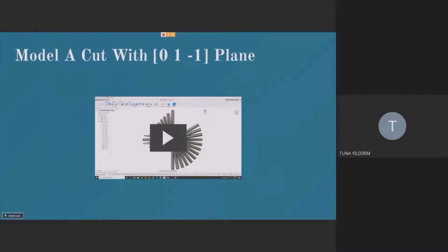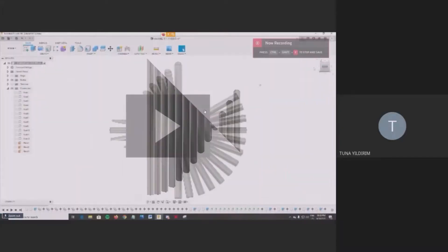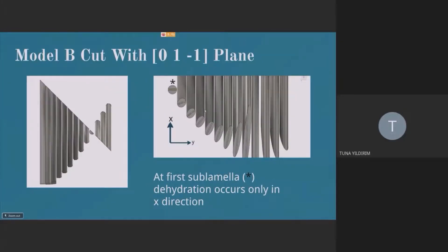And we try to make a model to get accurate results with that. And for model B, I applied the same cut. You can see the cut, one cut applying to all the sublamellas. And the dehydration will occur in x-direction as well.